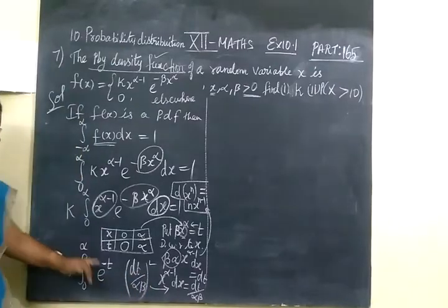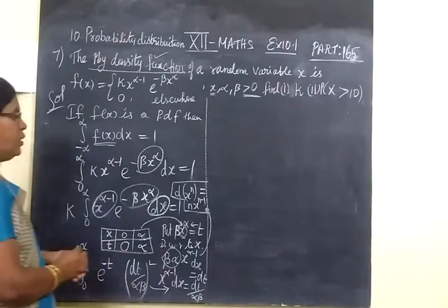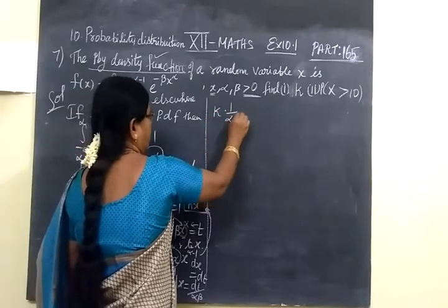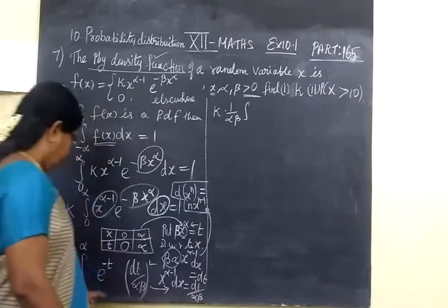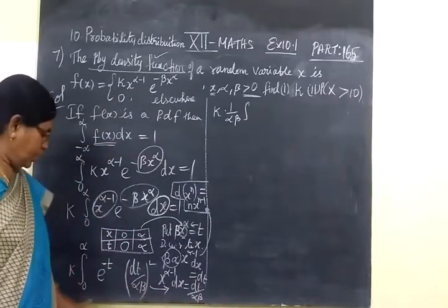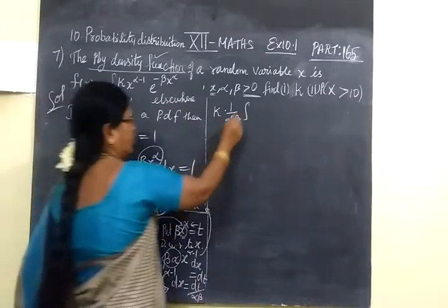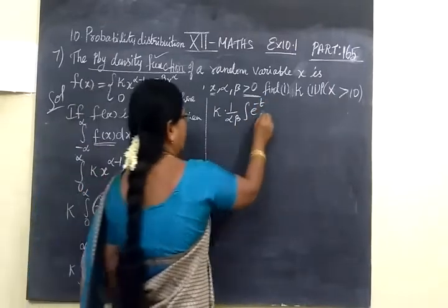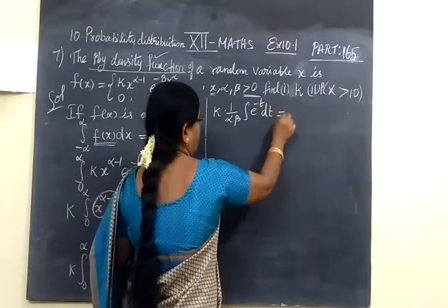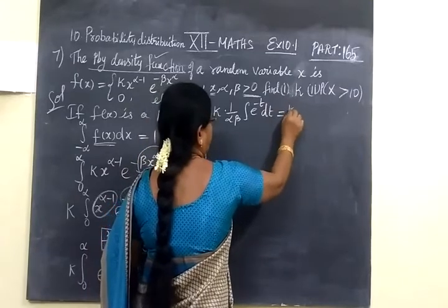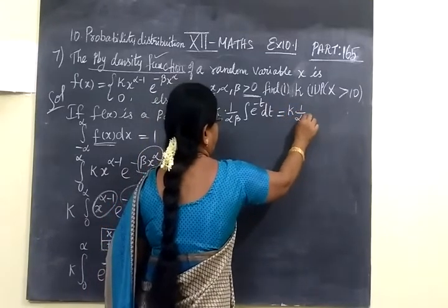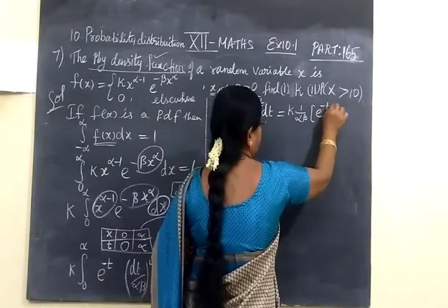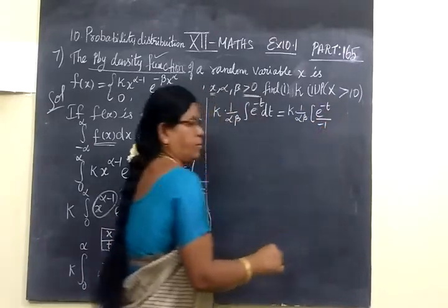After cancellation, K divided by αβ remains outside. Then integrating E power minus T, the integral of E^(-T) is E^(-T) divided by minus 1. Apply the limiting values from 0 to infinity.